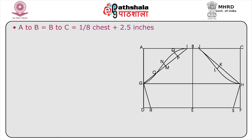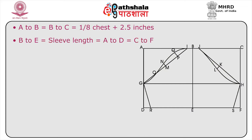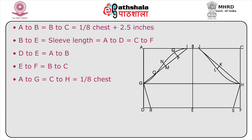For the sleeve: A to B equals B to C, that is one-eighth of chest plus 2.5 inches. B to E is sleeve length and A to D equals C to F. D to E equals A to B. E to F equals B to C. A to G equals C to H, that is one-eighth of chest. B to I equals B to J, that is one inch. Now join H–J and G–I.